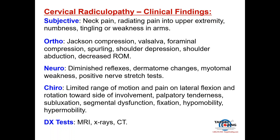You don't have to do all those orthopedic tests — two or three would be appropriate. Also document range of motion. For neurological tests: check reflexes, dermatome changes, myotomal weakness, and positive nerve stretch tests. From the chiropractic evaluation: document subluxation, palpatory tenderness, fixation/hypomobility, and limited motion. If after six to eight visits the patient isn't responding as expected, recommend diagnostic imaging.